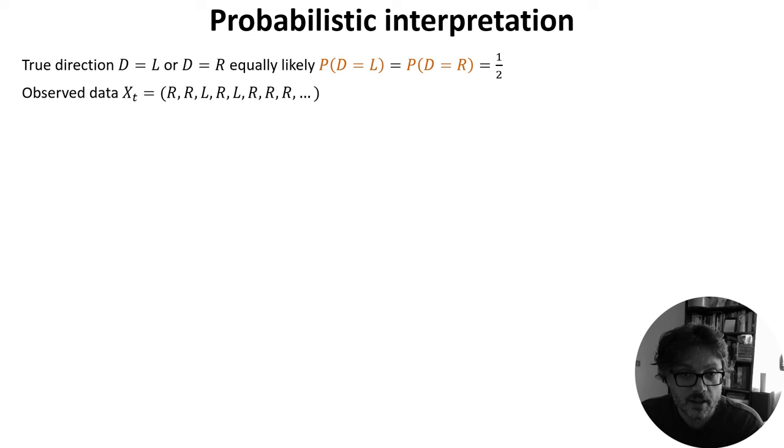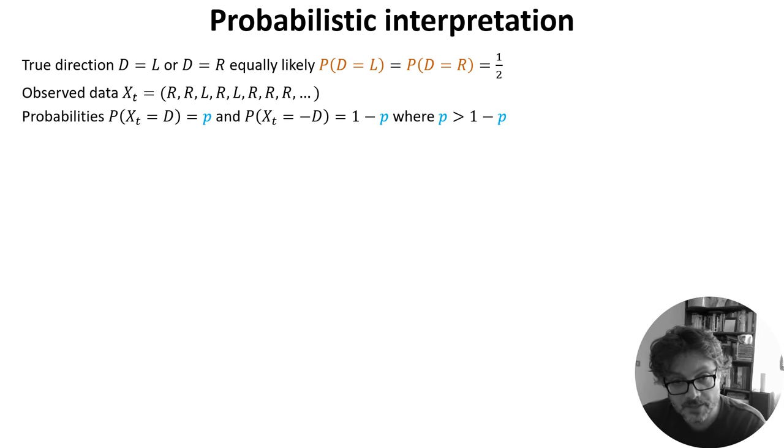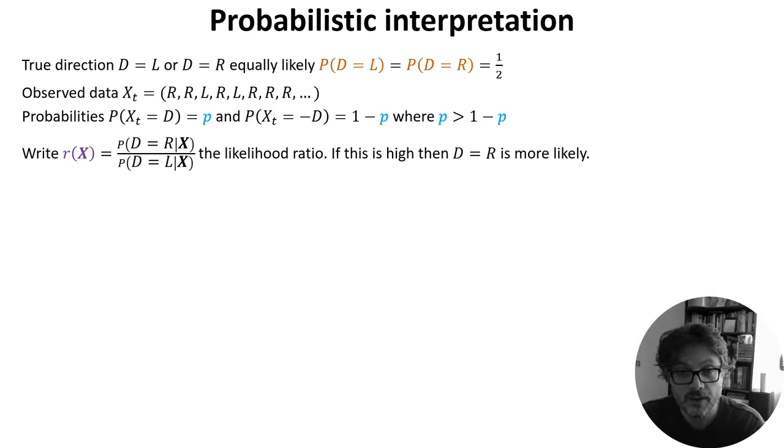Now, the data observed at time t is a series of symbols x_t, each of which is R or L. The probability you observe the correct symbol is p, and the probability you observe the incorrect symbol is 1 minus p. Now, given we know the observed data and we want to infer the unknown value of d, we compute which of those two options is more likely. We'll write that as r(x) equals the ratio of the probability that d equals R given the observations x, divided by the probability that d equals L. If this ratio is high then d equals R is much more likely, and if it's lower then d equals L is more likely.